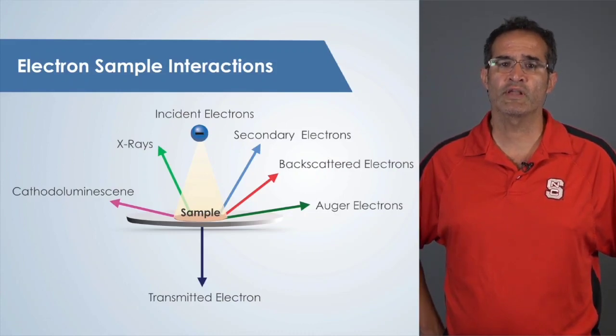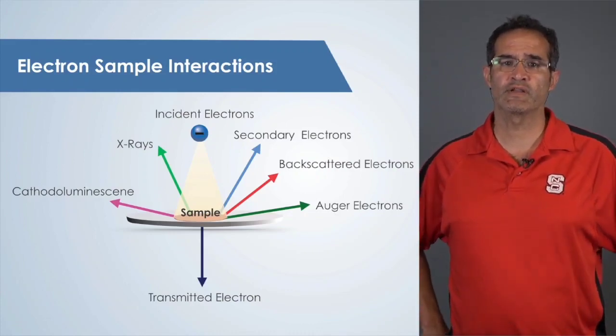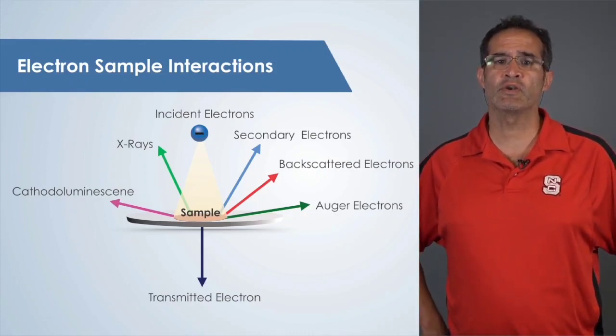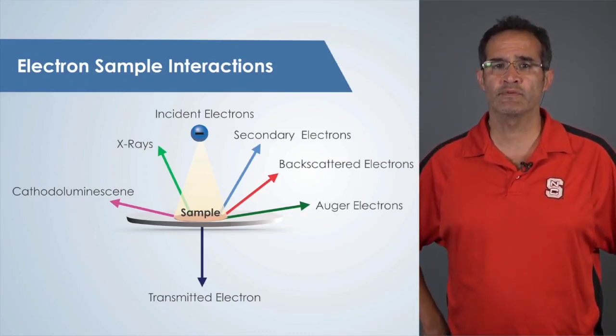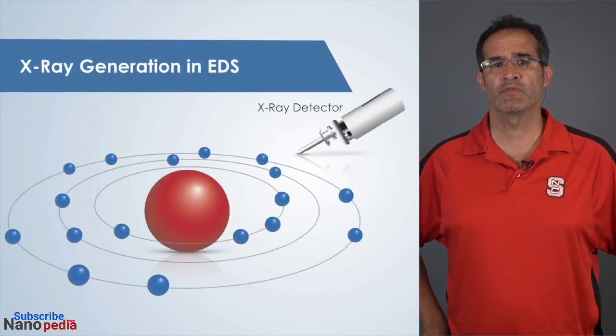However, electrons are not the only signals generated as a result of the beam interacting with the sample. The beam also causes x-rays to be emitted from the sample.